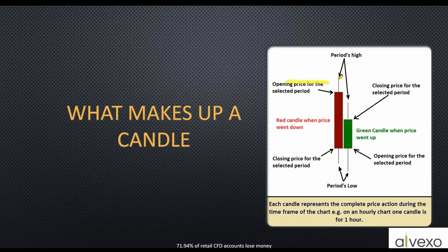The line extending from the candle is called the wick or shadow, and the main portion is called the body of the candle. To explain this, think of a game called tug of war - one team takes one side of the rope, the other team takes the other side, and they pull back and forth. Sometimes one team gets pulled into the river but yanks back, sometimes they stay neutral, and sometimes one team dominates and pulls the other team all the way in.